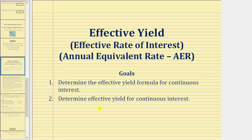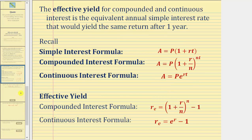I do have another lesson on effective yield for compounded interest. Effective yield for compounded and continuous interest is the equivalent annual simple interest rate that would yield the same return after one year.